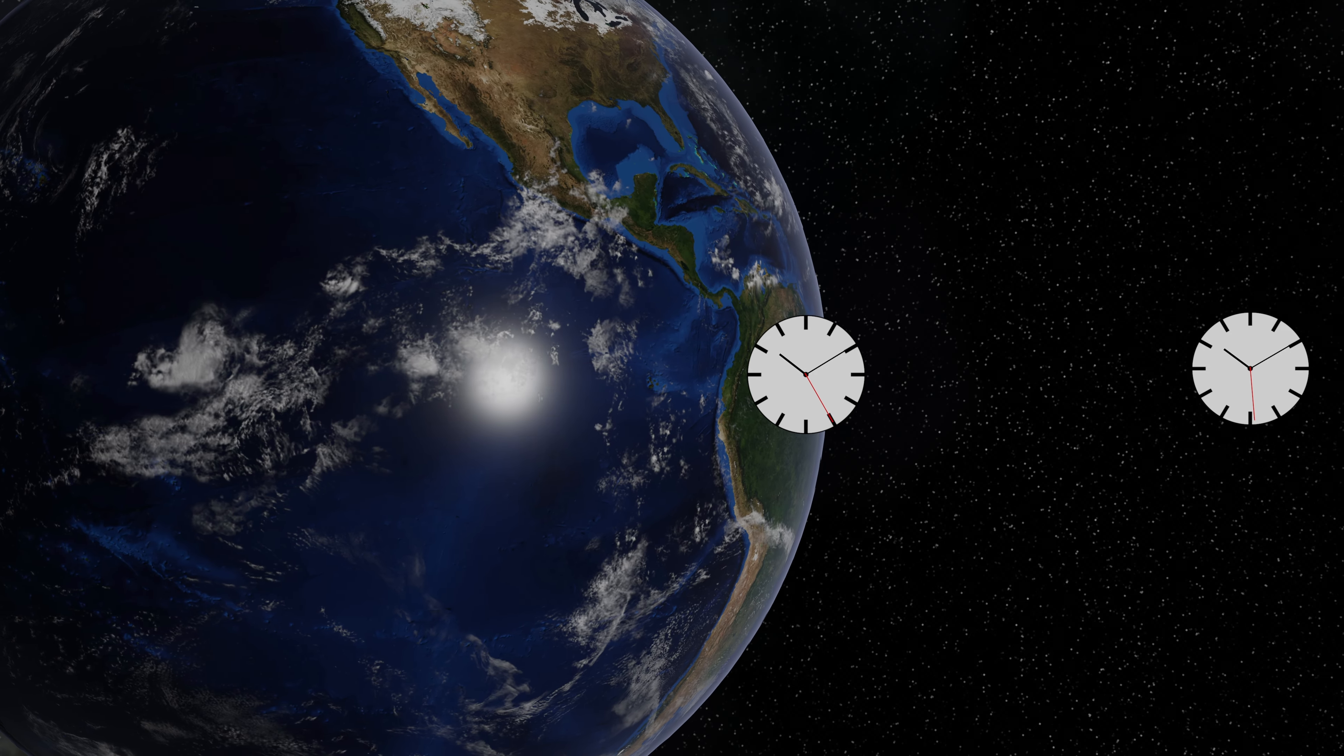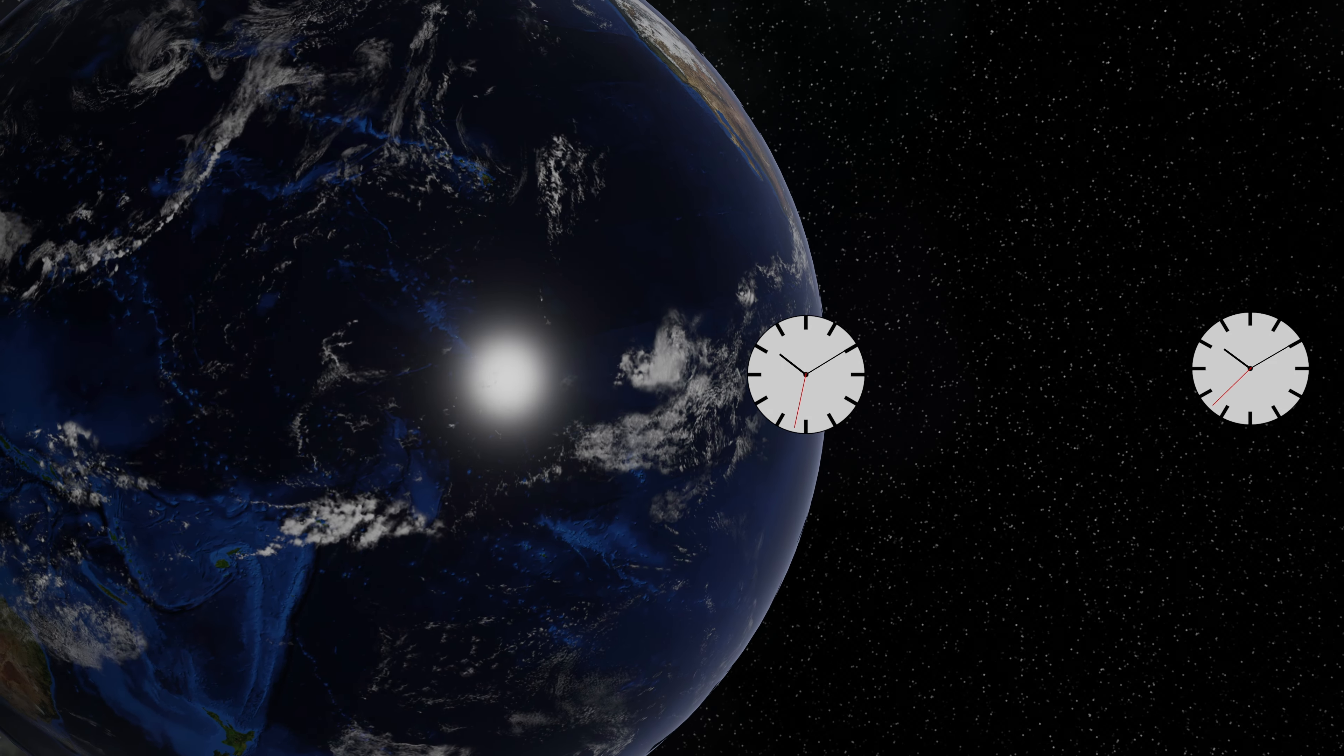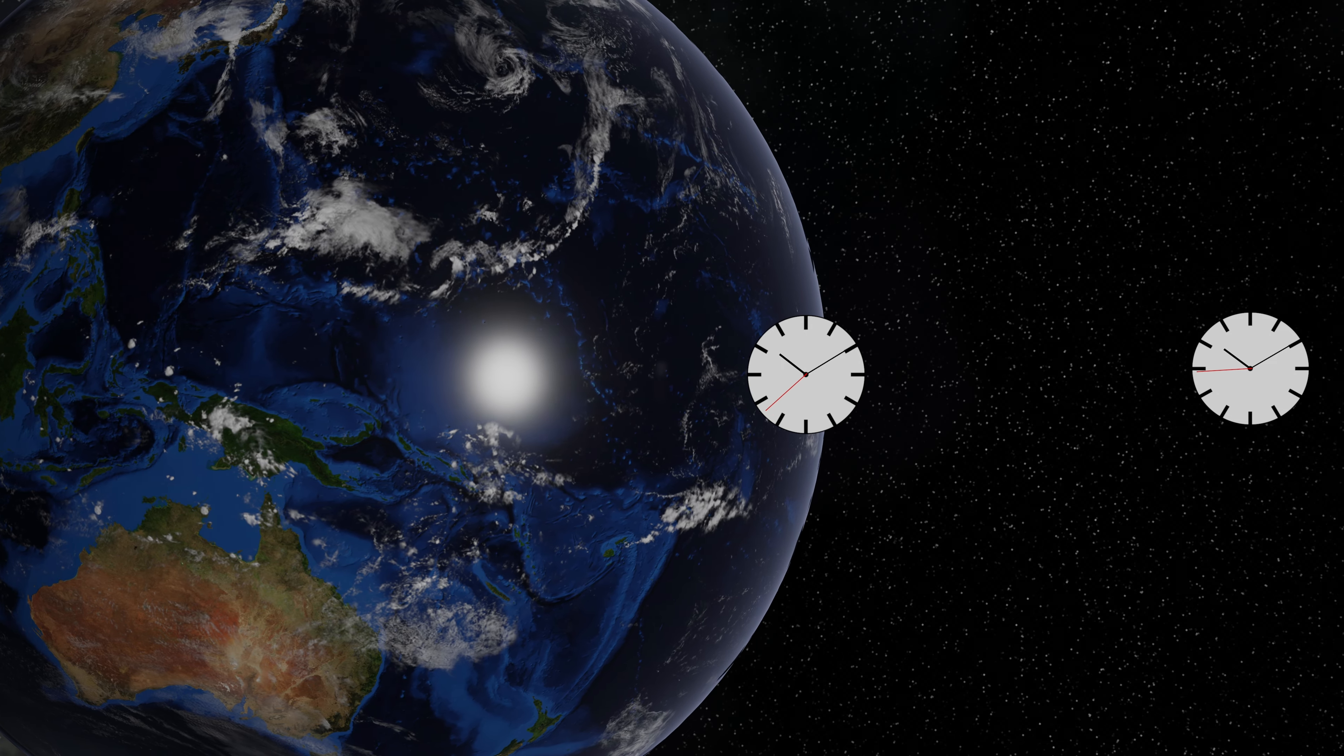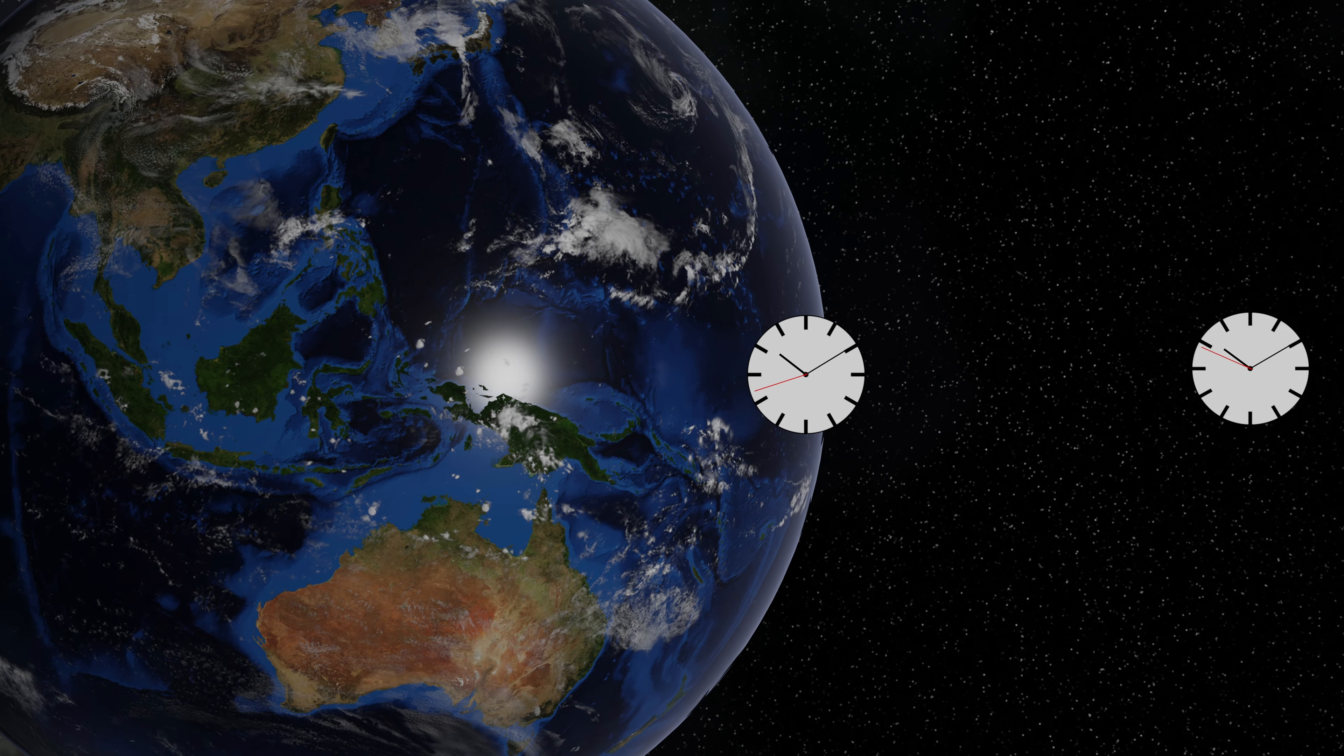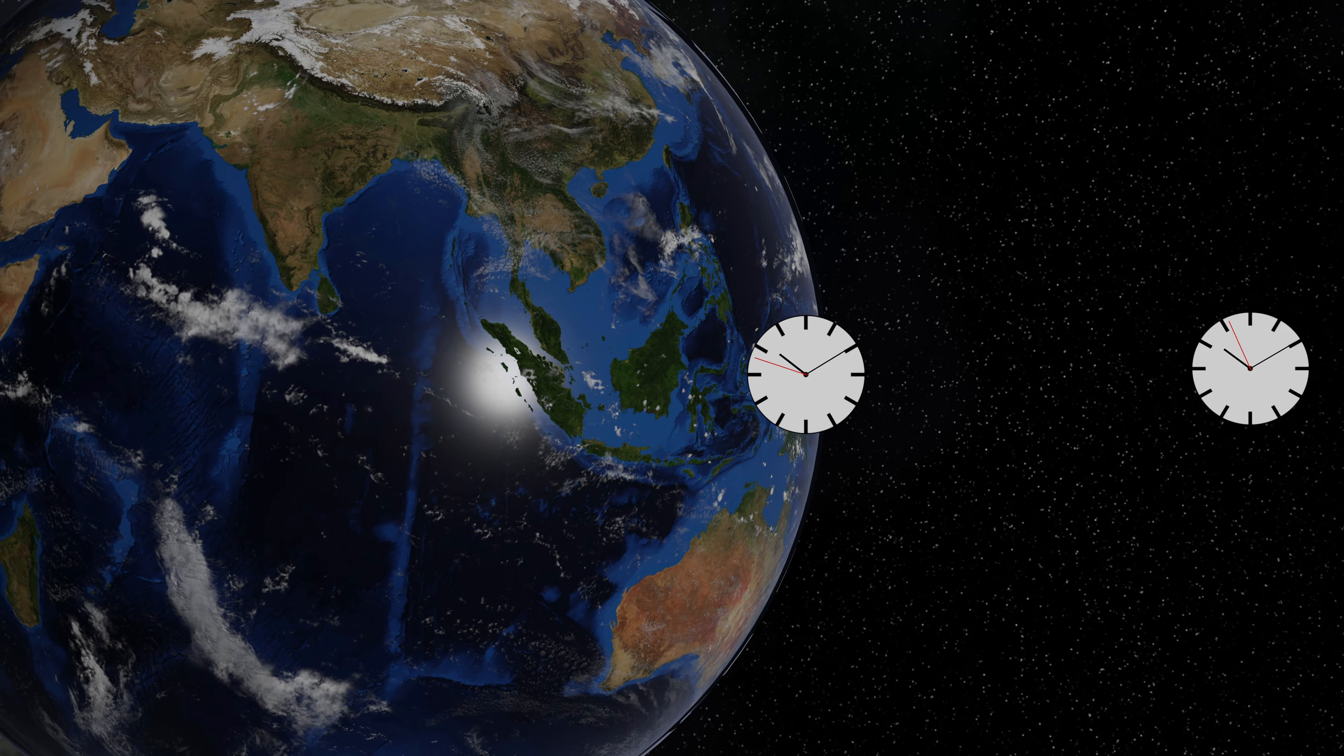And whilst this discrepancy might be minuscule, it's important. GPS systems use satellites to very accurately determine the location of the device that's using it. These days, pretty much every smartphone uses this technology. And this time discrepancy needs to be built into the software that governs these systems, so that we can accurately find our way to the nearest coffee shop.